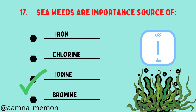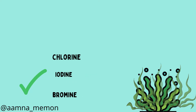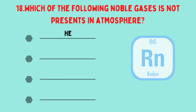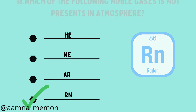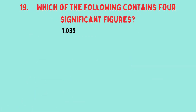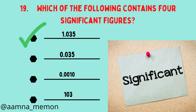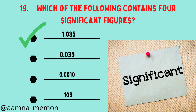Seaweeds are an important source of iodine. Which of the following noble gases is not present in the atmosphere? Radon. Which of the following contains four significant figures? 1.035.